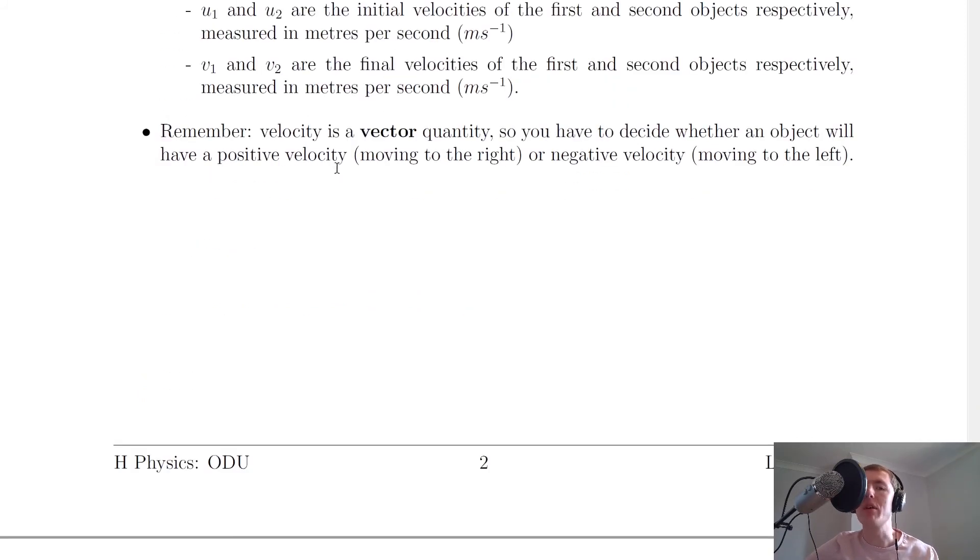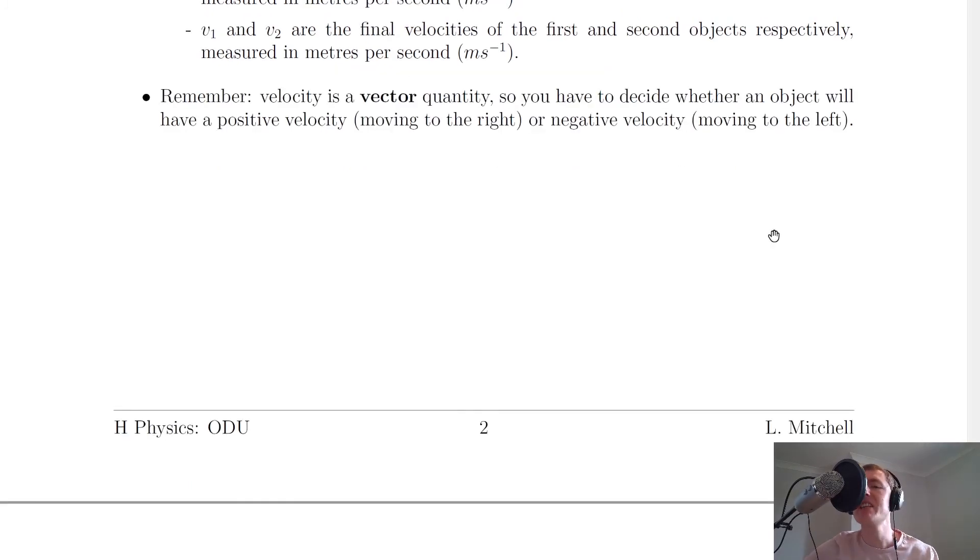Lastly, remember that velocity is a vector quantity, so you have to decide whether an object will have a positive velocity when it's moving to the right or a negative velocity if it's moving to the left. The sign convention is going to be very important when you're doing problems on momentum and conservation of momentum.